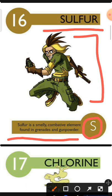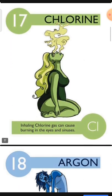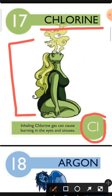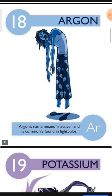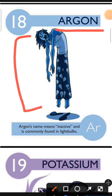Element number 17 is Chlorine. The characteristic of Chlorine is: inhaling Chlorine gas can cause burning in the eyes and sinuses. Element number 18 is Argon. The characteristic of Argon is: Argon's name means inactive and it is commonly found in light bulbs.